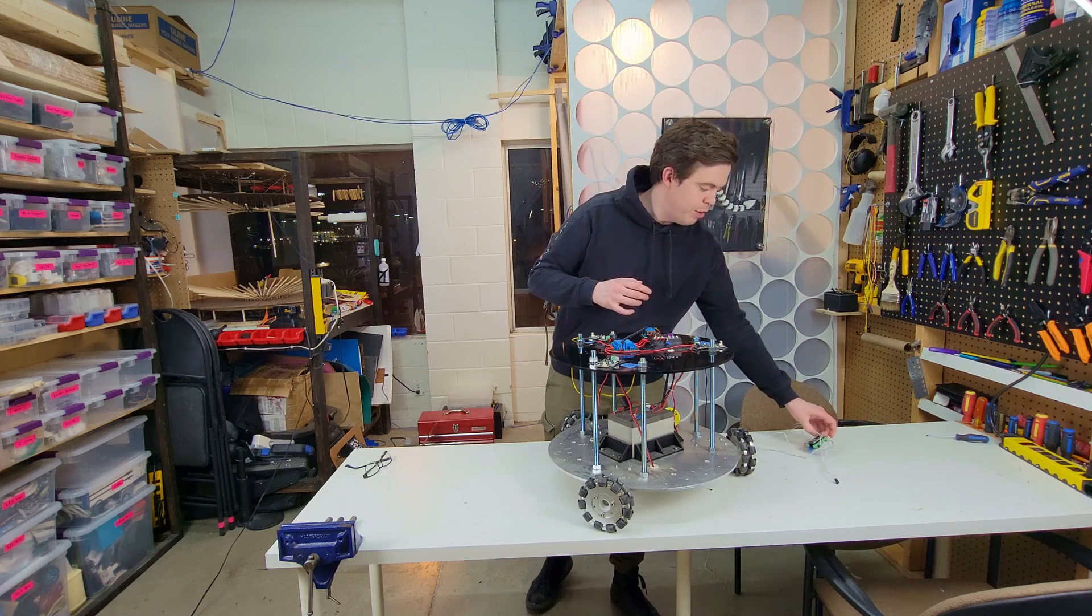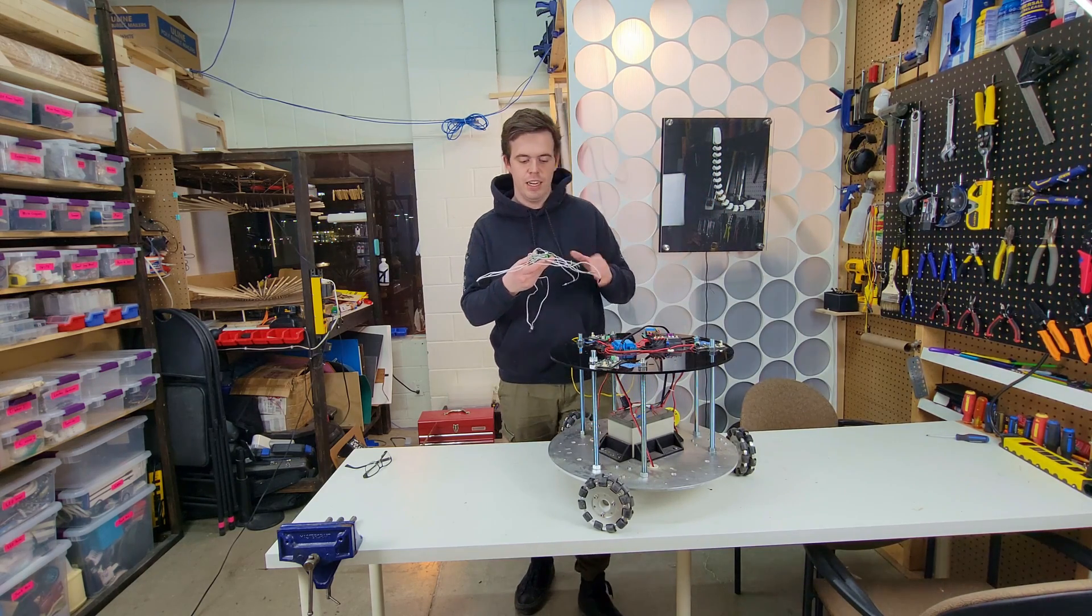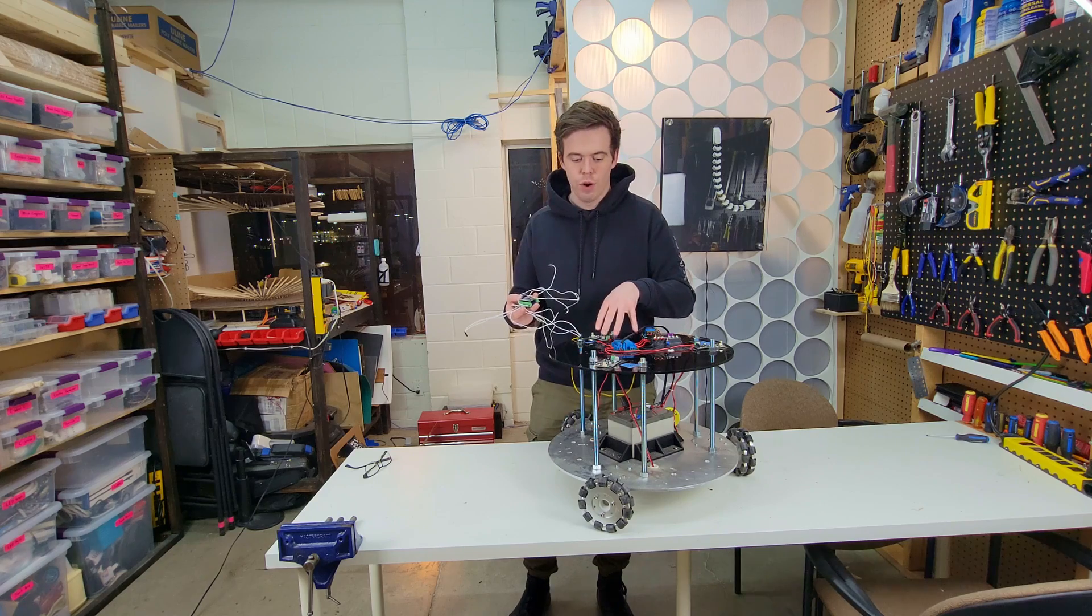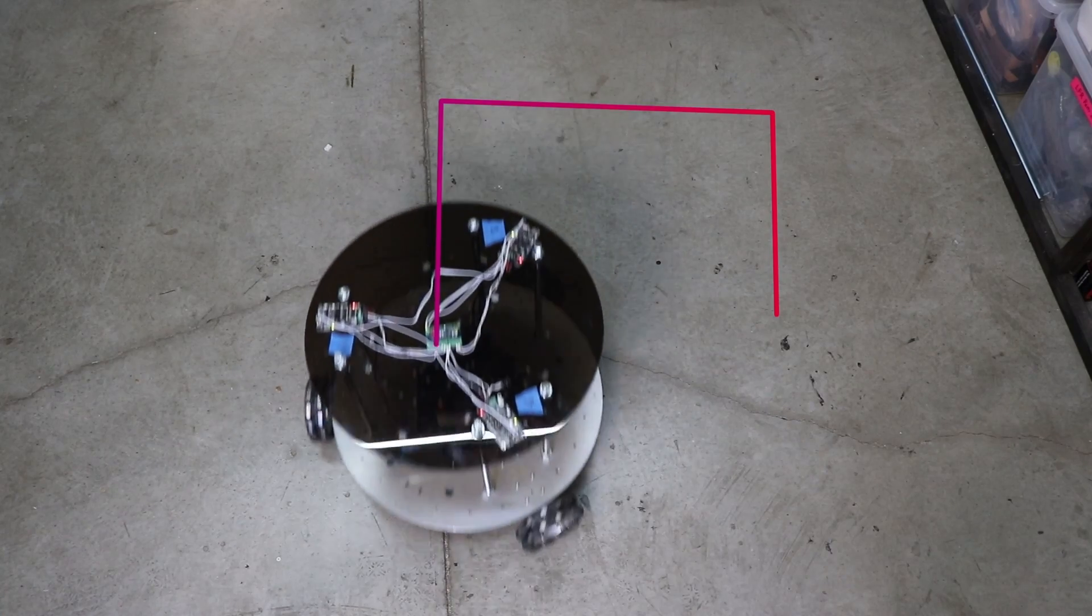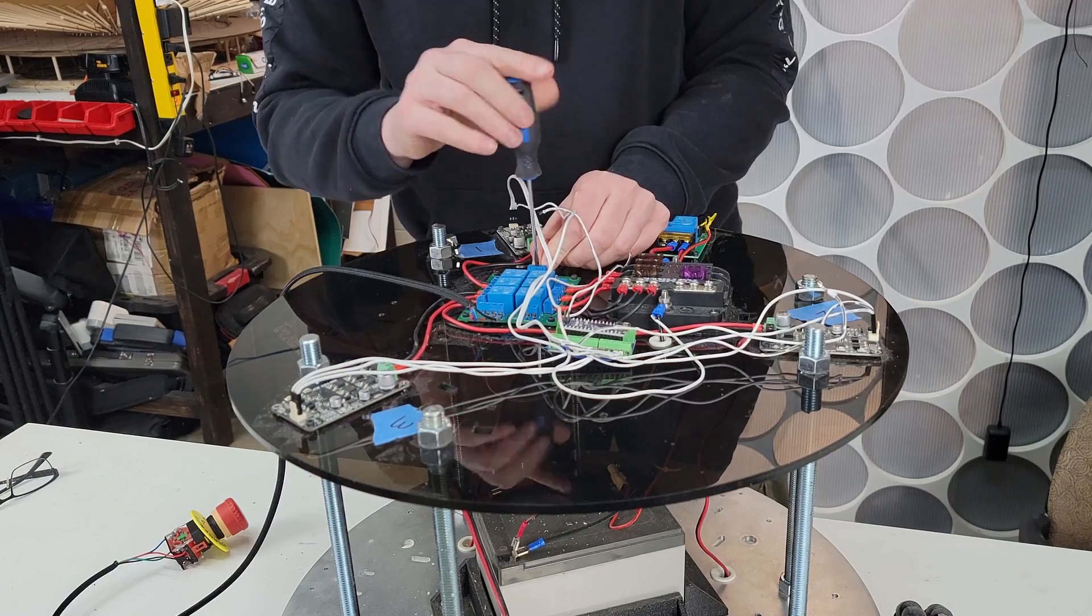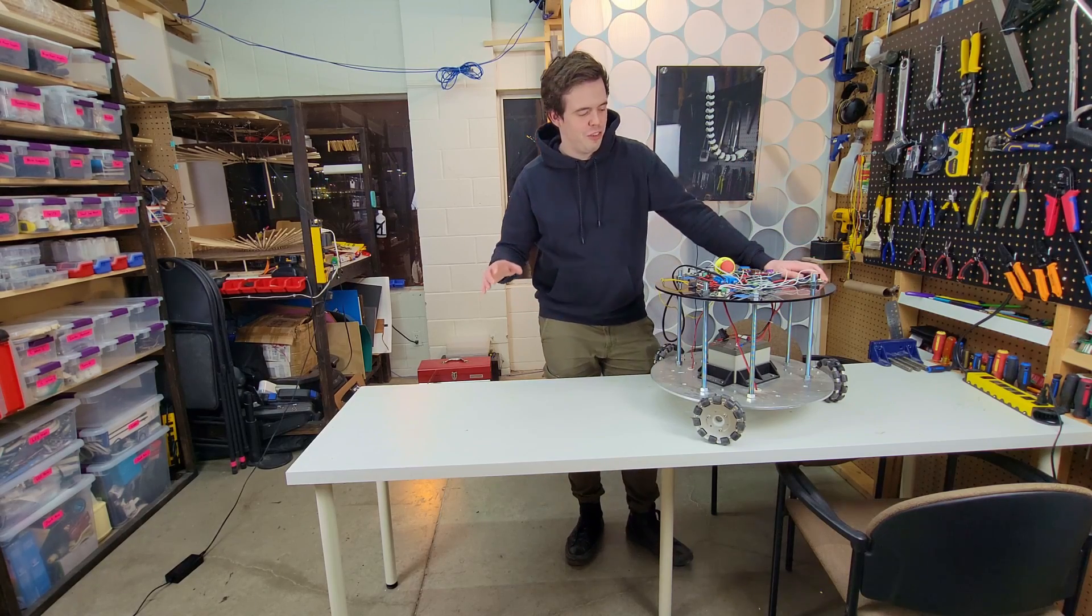If you saw the previous video in this series, you might recognize this wiring harness as the controller that I was using to drive the robot in a square. I'm going to repurpose this and put it back on here, this time with the emergency stop. So this is going to be a little bit of a trial by fire.